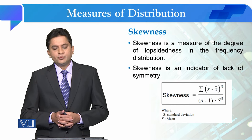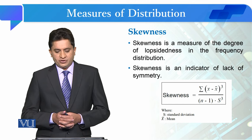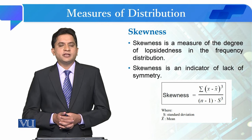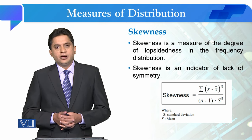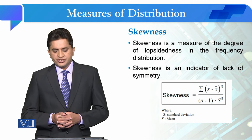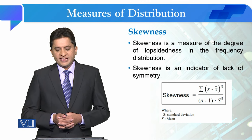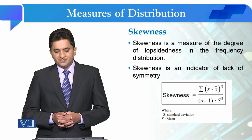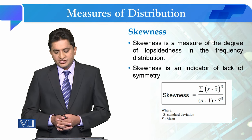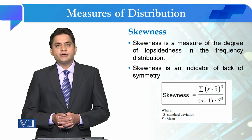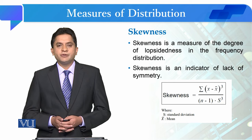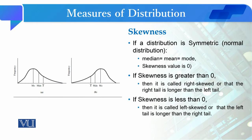Skewness is a measure of the degree of lopsidedness in the frequency distribution, and we can say that skewness is an indicator of lack of symmetry — it tells us that the symmetry in some data is much more violated. The formula in statistics is: summation of (x minus x-bar) to the power of 3, divided by (n minus 1) into standard deviation to the power of 3. If you have a dataset, we will be able to compute the mean and then we will need to compare how to interpret the skewness.